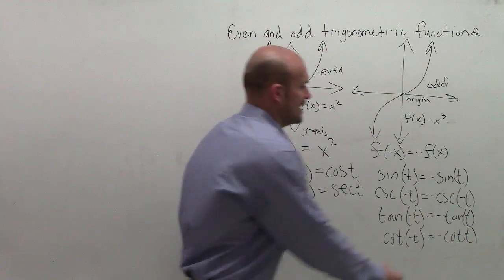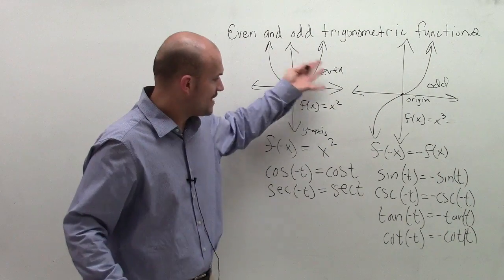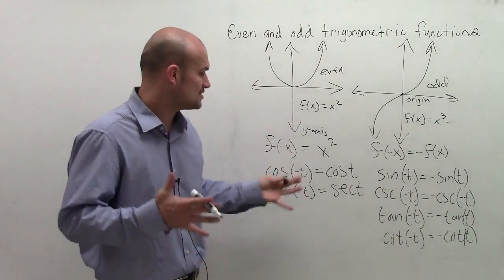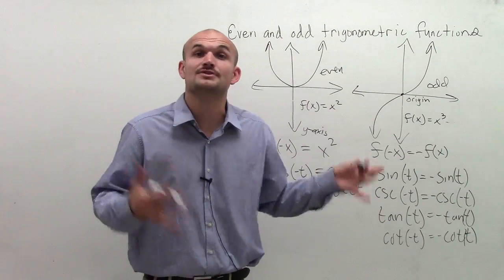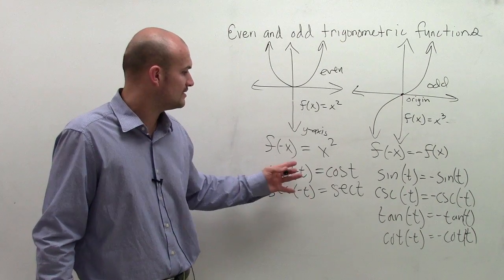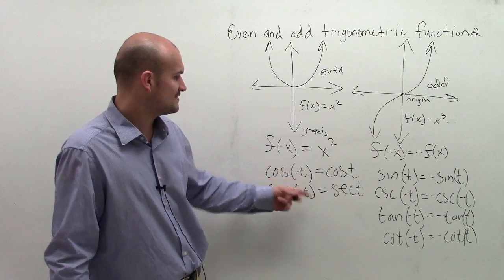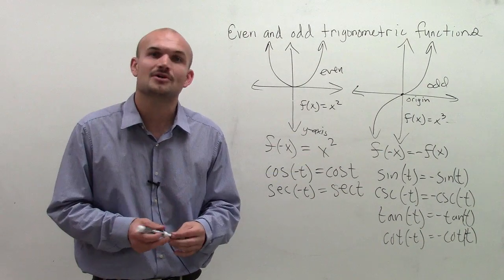So it's important for you to understand the difference between odd and even functions graphically and also algebraically. And then also to notice what trigonometric functions are odd or even. Because if it's even, you know that the function of a negative value, negative t, is going to still be the same as cosine of t.